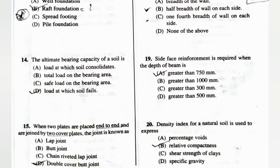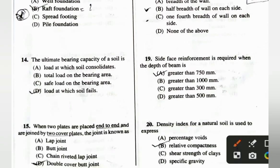Side face reinforcement is required when the depth of the beam is generally greater than 750 mm (75 cm), provided at 0.1% of the gross cross-sectional area.